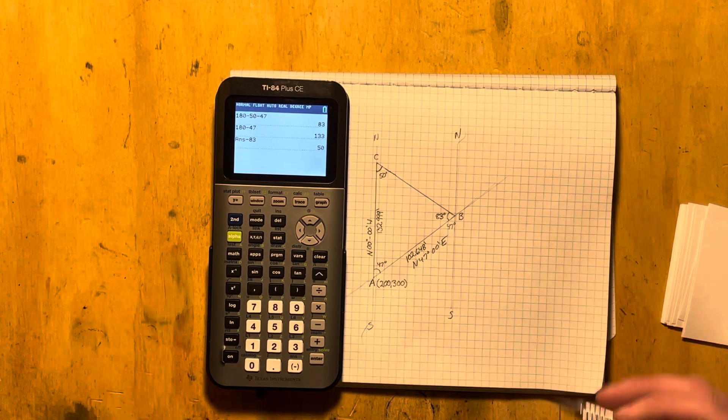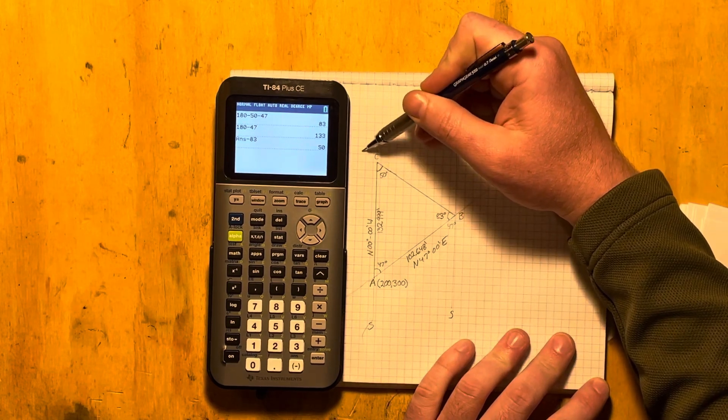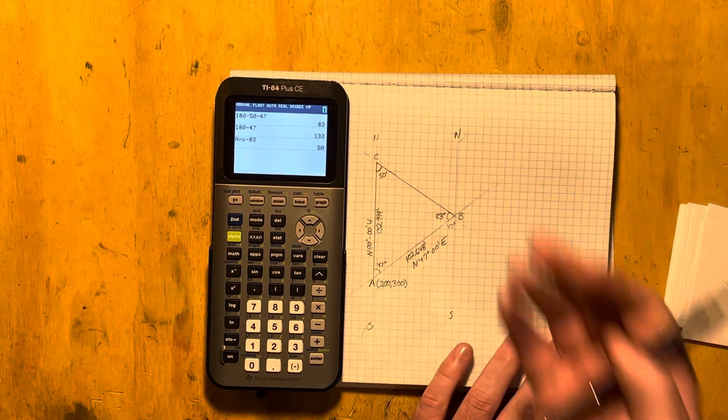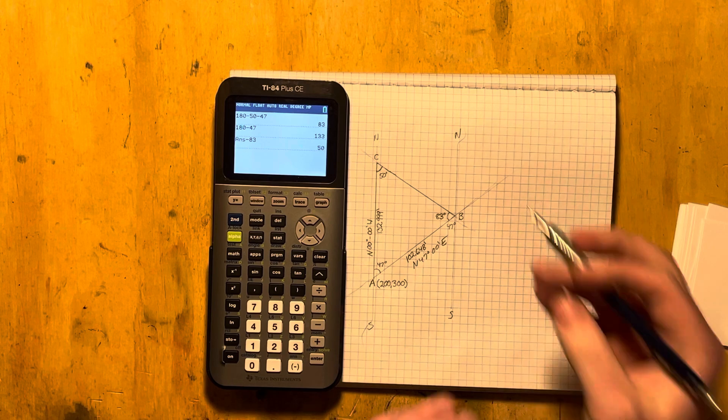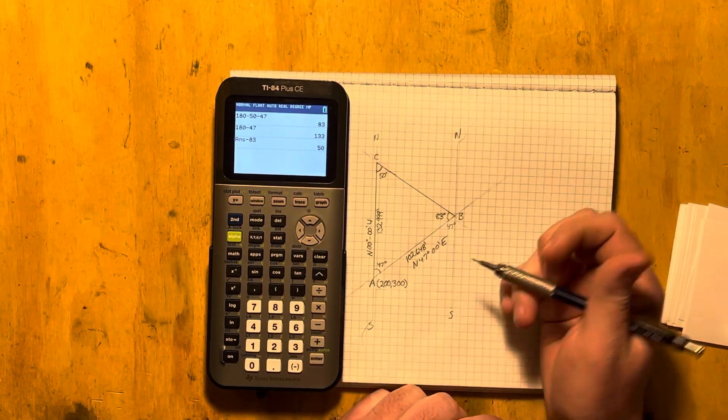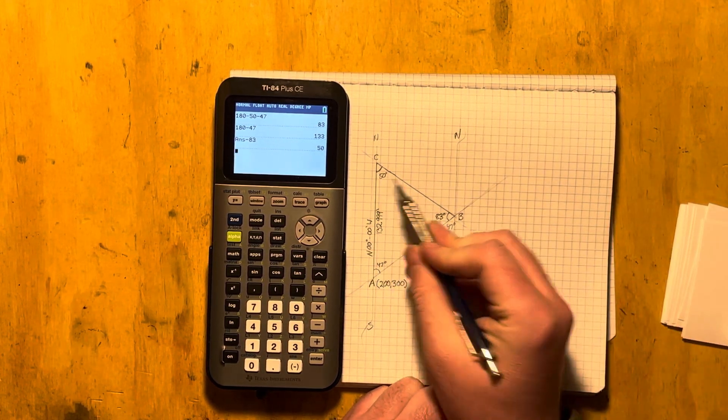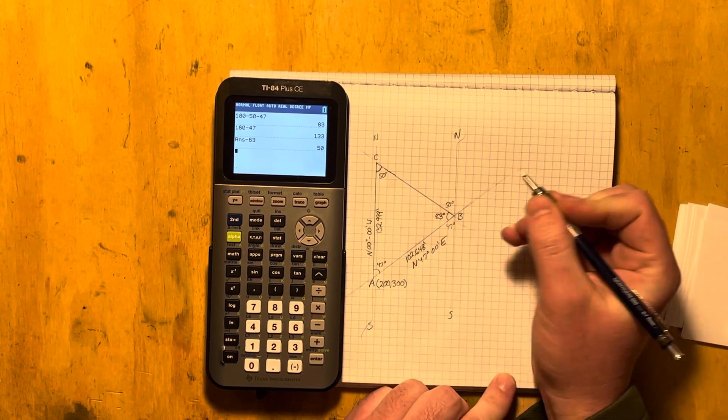Actually, we didn't even need to do that because what we could have done is we could have extended this line BC through these two imaginary parallel lines that we created here, both running north-south. And that would have told us, based on it being an opposite interior angle, that this would be 50 degrees.